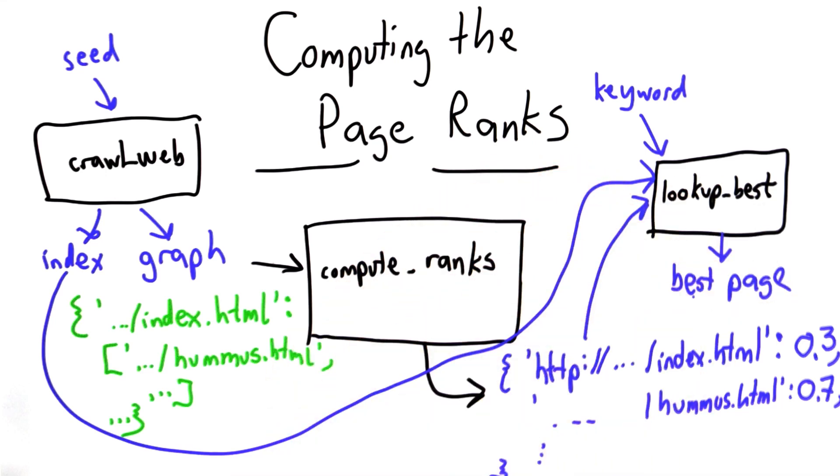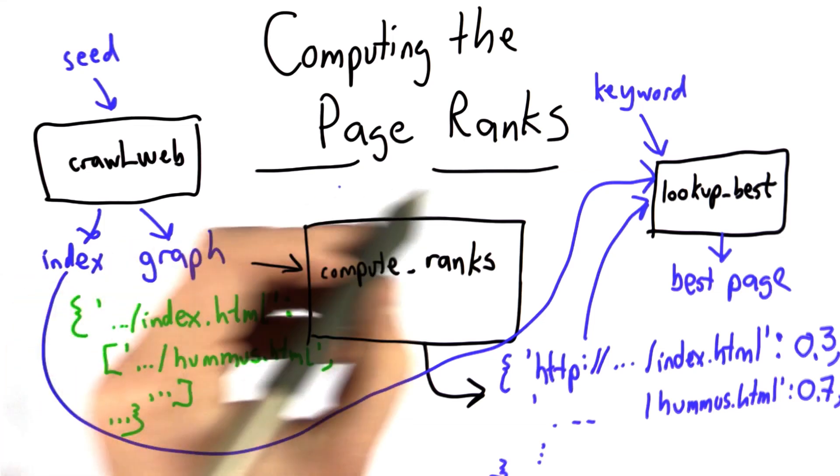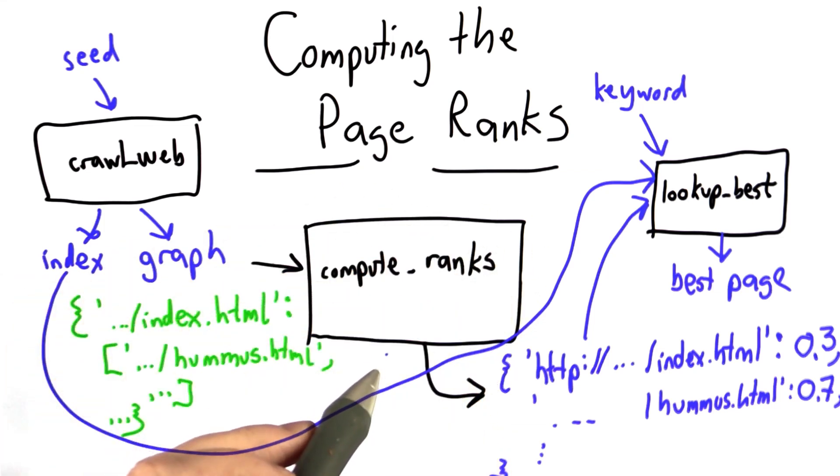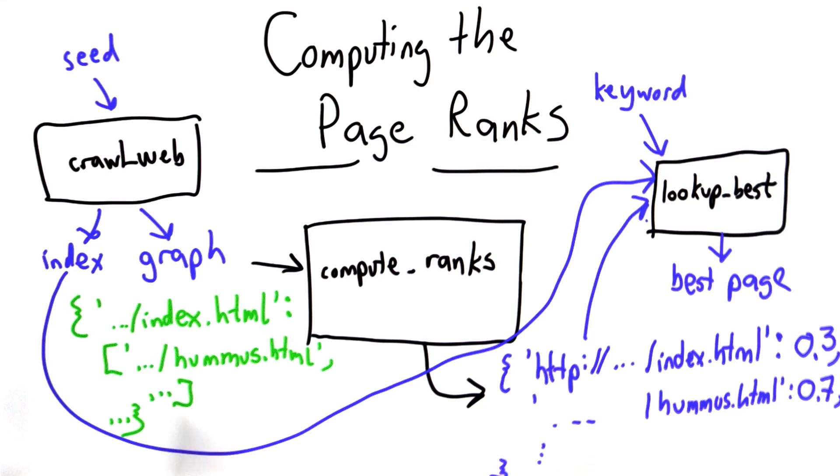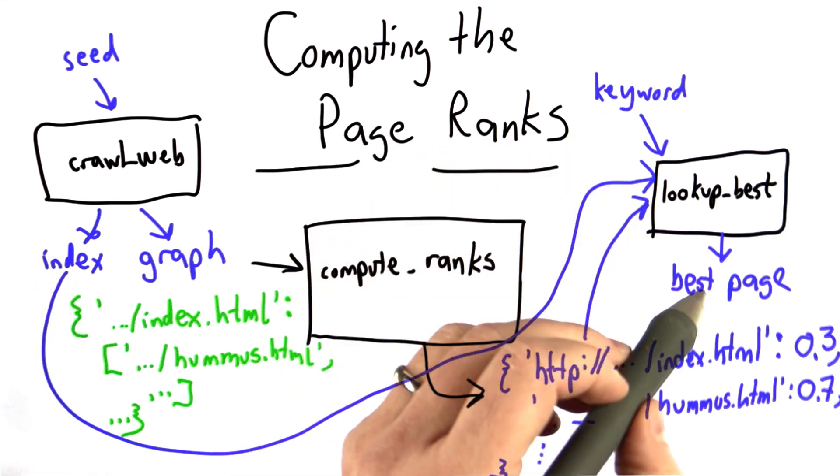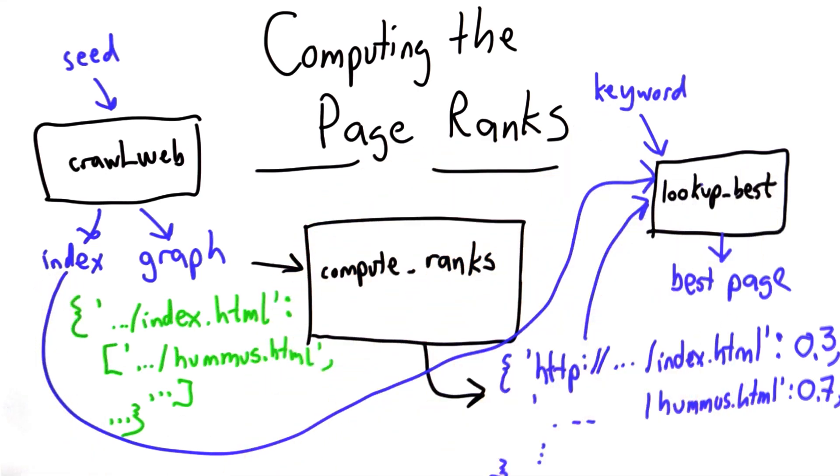So once we've done that, you'll have a complete search engine. You'll have a crawler that starts from a seed, finds pages, produces an index, produces a graph. That graph is the input to compute_ranks. Compute_ranks uses our page ranking algorithm to figure out the pages that are most popular. And then lookup_best takes the graph as input, the index as input, and the keyword, finds the pages that contain that keyword, and identifies the one that's best using the ranks.